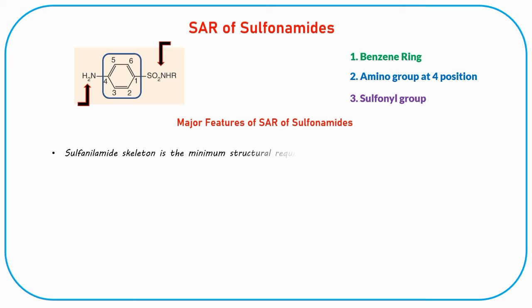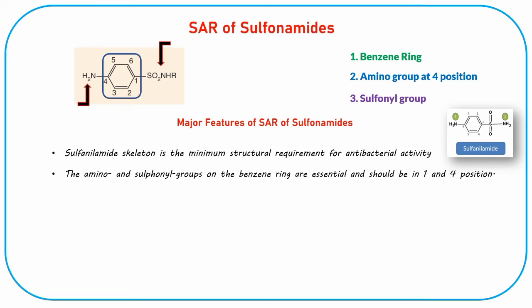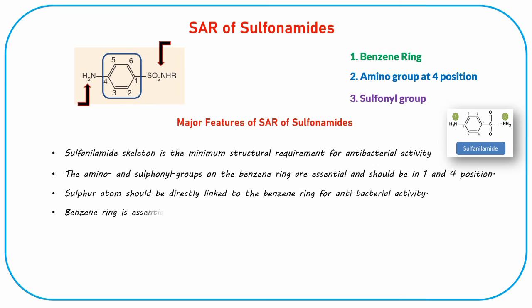The major features of SAR of sulfonamides include the following. The sulfonamide skeleton is the minimum structural requirement for antibacterial activity. The amino and sulfonyl groups on the benzene ring are essential and should be at the 1 and 4 positions. The sulfur atom should be directly linked to the benzene ring for antibacterial activity. The benzene ring is essential for activity, and replacement of the benzene ring by other ring systems or the introduction of additional substituents on it decreases or abolishes its activity.